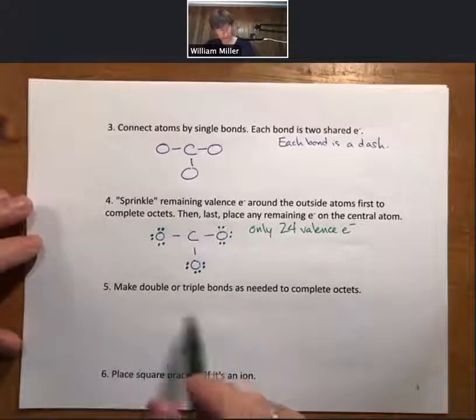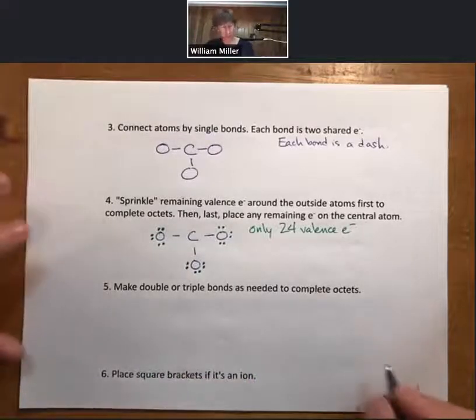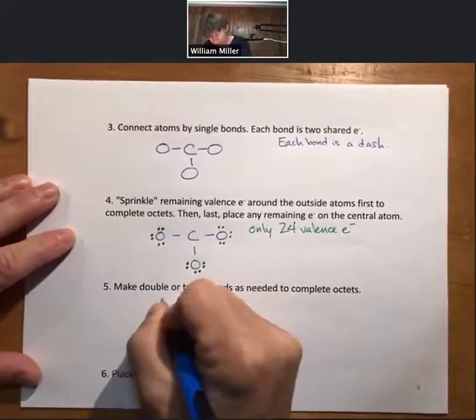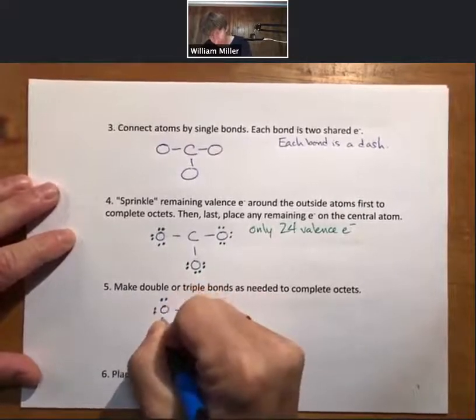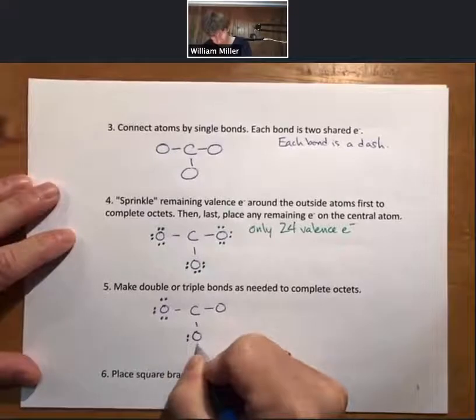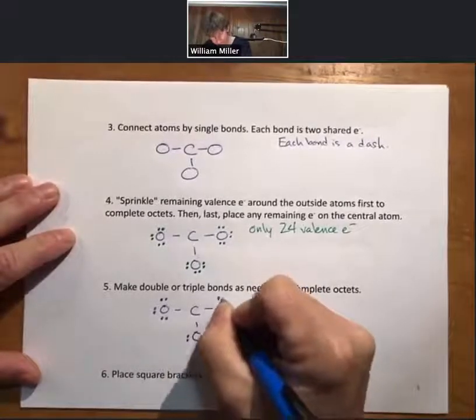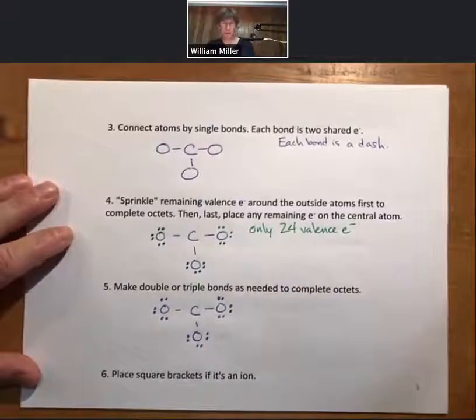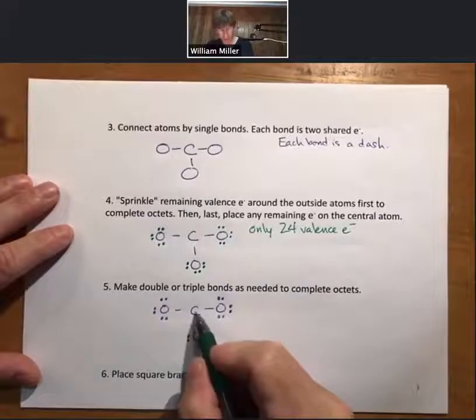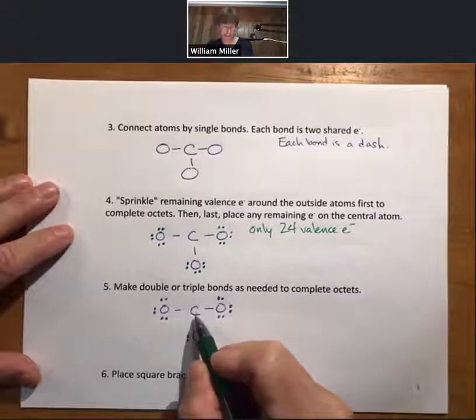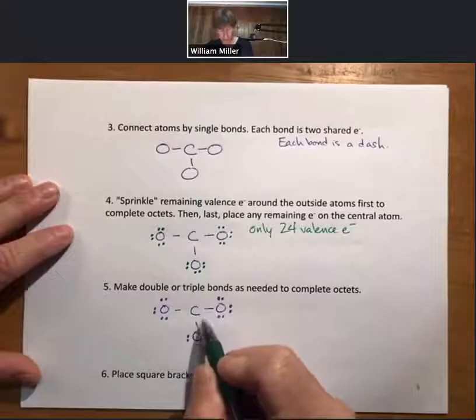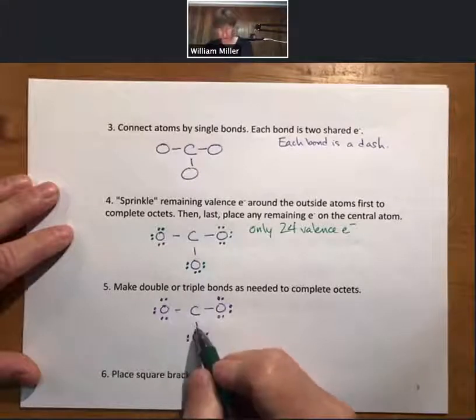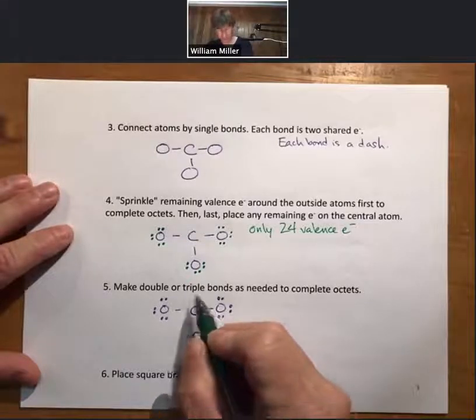Now for step five, make double or triple bonds as needed to complete octets. I'll write in blue where step four left off. Okay, so that's where we left off. Now we need carbon as the center atom to have an octet. It only has one, two, three bonds. Each bond is two shared electrons, so that's two, four, six electrons around it.